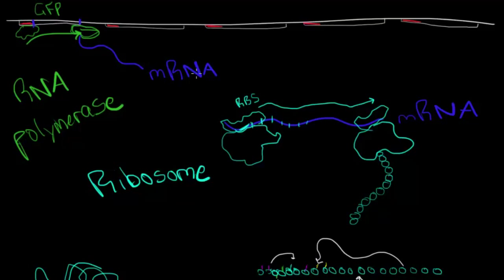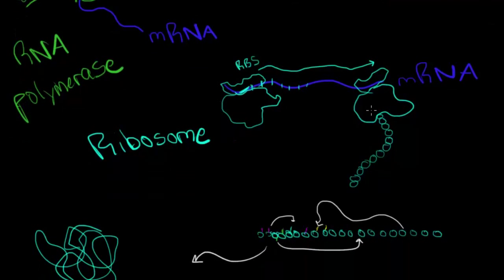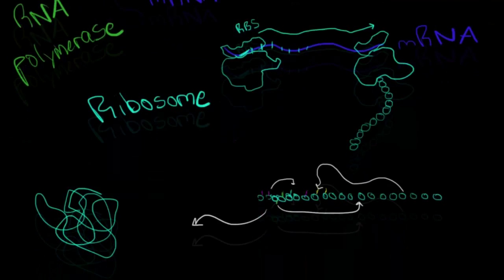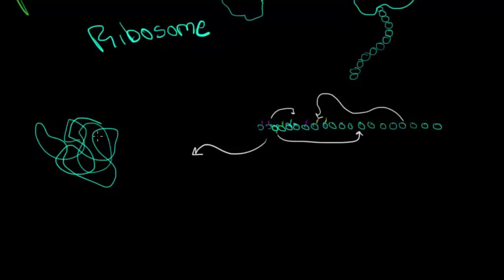And then it turned it into an mRNA of the GFP sequence. And then the ribosome turned that into the proper amino acid sequence, which then folded up on itself and turned into a molecule, which quite amazingly elicits a green light when another light is shined on it.